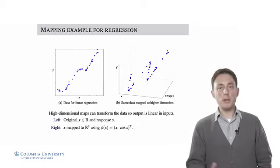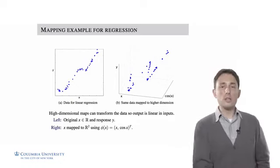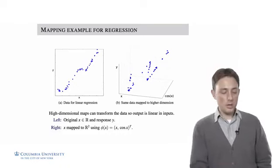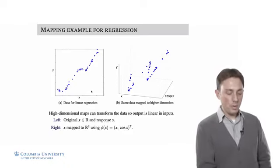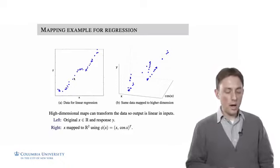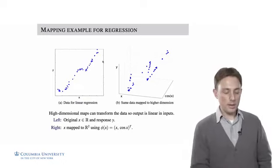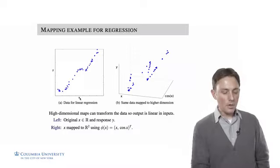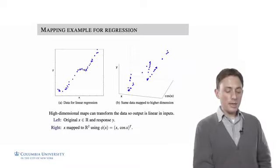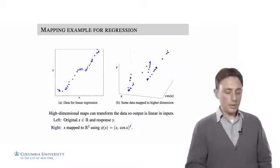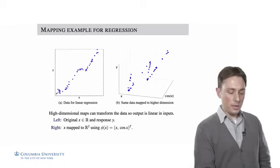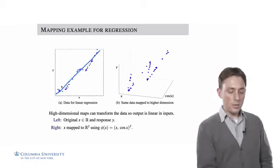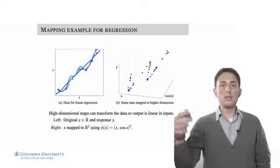Let's look at an example for regression. This is a toy problem where we want to do linear regression for a dataset where the input is x, the response is y, and x is in R. Clearly the data doesn't look suitable for a linear model, because if we fit a line through this with least squares, we would get something that wouldn't take into account the undulation in the data.